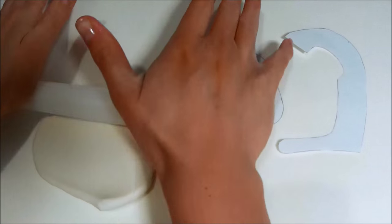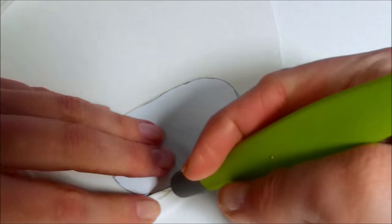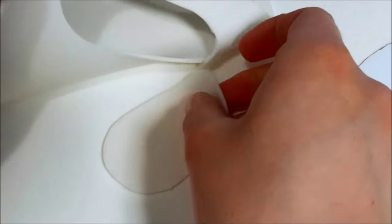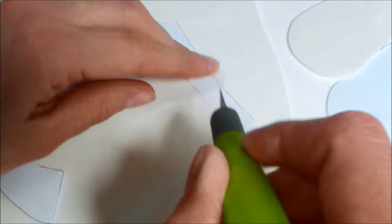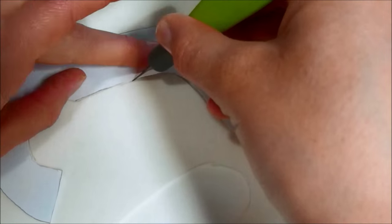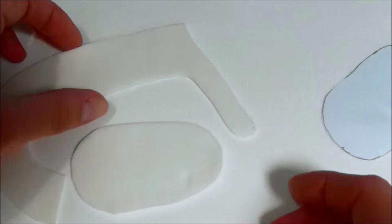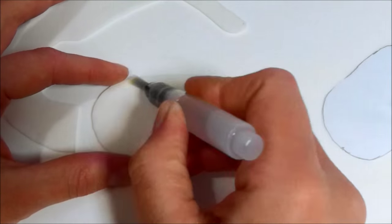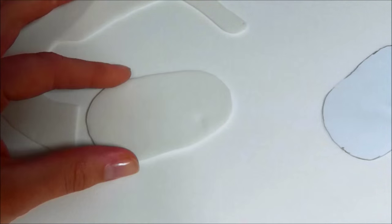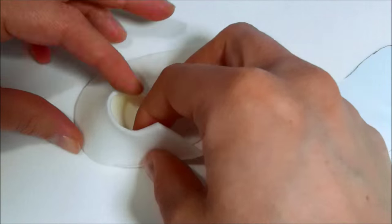Roll out some white fondant and cut those shapes out of it. Put some water on the edge of the sole and stick the other piece to it.